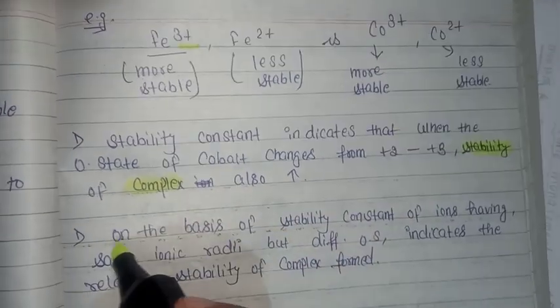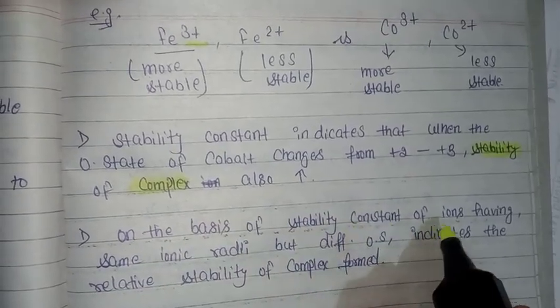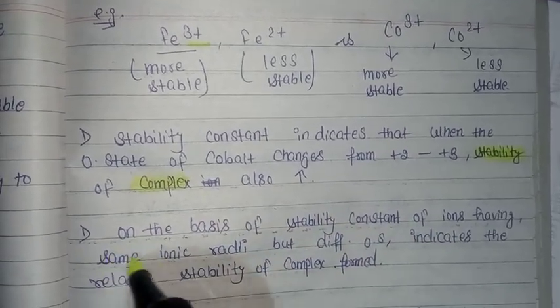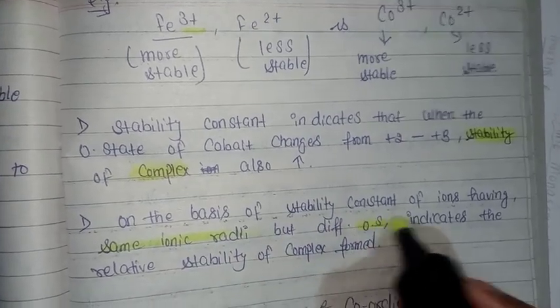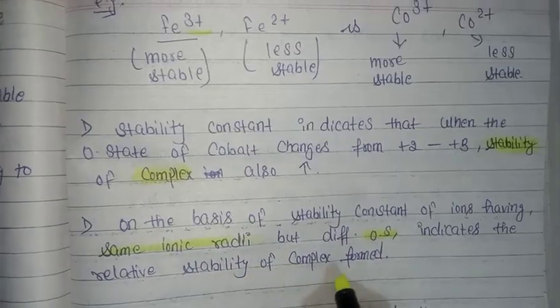Stability constant indicates that when the oxidation state of cobalt changes from plus two to plus three, stability of complex also increases. Stability of complex also increases on the basis of stability constant of ions having same ionic radii but different oxidation states.